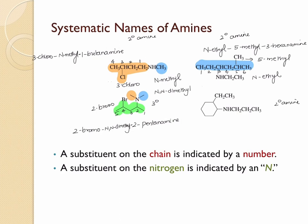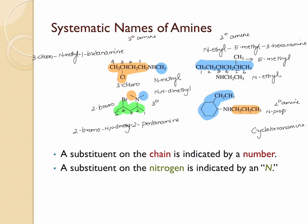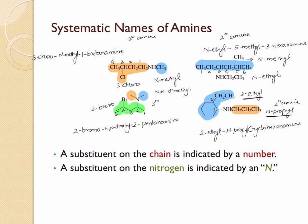The last compound is a secondary amine with one hydrogen on the nitrogen. One substituent is a propyl group and the other is an ethylcyclohexane structure. The ring structure has more carbons and is the parent, so the parent name is cyclohexanamine. The propyl group is on the nitrogen, listed as N-propyl. The ethyl group on the cyclohexane ring is at position two relative to the nitrogen attachment, listed as 2-ethyl. Since E comes before P alphabetically, the complete name is 2-ethyl-N-propylcyclohexanamine — with no spaces.